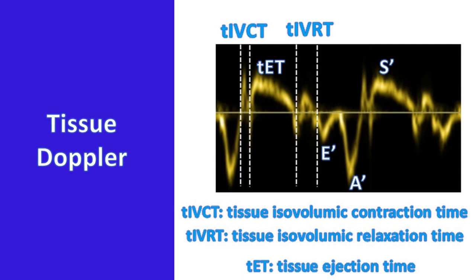Longitudinal function of the right ventricle can be quantified by tissue Doppler methods. Longitudinal velocities assessed by tissue Doppler include the lateral mitral annulus velocity, septal annulus velocity, and tricuspid annulus velocity. These tracings have distinct E-prime and A-prime in diastole, a systolic velocity S-prime, and spikes for isovolumetric contraction and relaxation. Tissue Doppler can quantify both systolic and diastolic myocardial function, is less load dependent, and enables early identification of right ventricular dysfunction. It can also assess radial function. Limitations include angle dependence and confounding effects of cardiac tethering and translation.